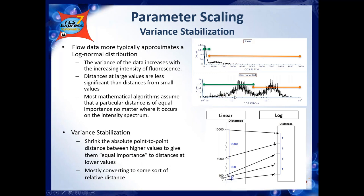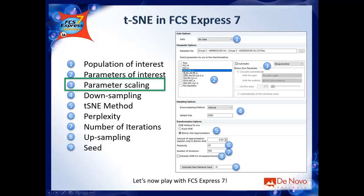Since tSNE and most high-dimensional algorithms rely on distances, you want to apply a scale so that distances at higher values have the same importance as distances at lower values. In FCS Express, for each parameter you can set a scale. By default the scale is automatic — biexponential with the FACSDiva method — but you can open a plot, look at your data, and if a different scale looks better, select the parameter, uncheck the automatic option, and choose any scale. For mass cytometry users, for example, you would likely select an arcsinh transformation.